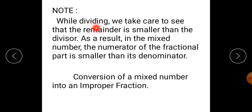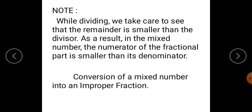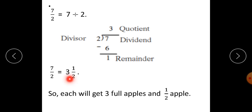Note: while dividing, we take care to see that the remainder is always smaller than the divisor. As a result, in the mixed number, the numerator of the fractional part is smaller than its denominator. Here you can see this — since the remainder is smaller than the divisor, the numerator of the mixed number is less than the denominator of the fraction.